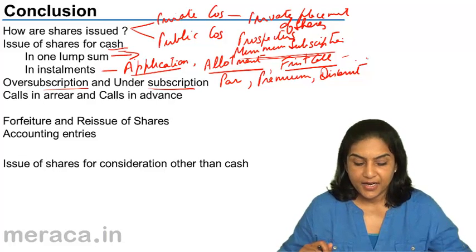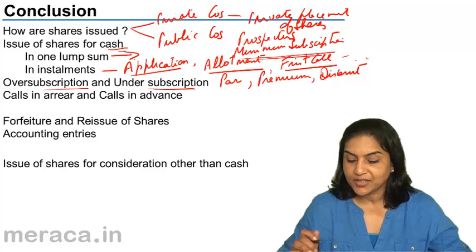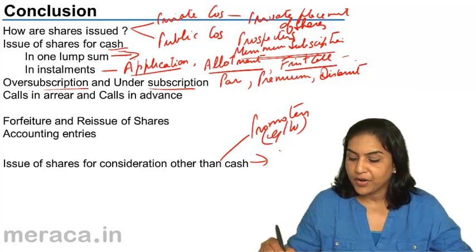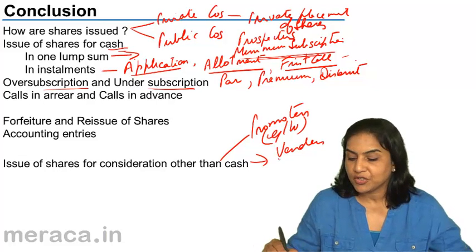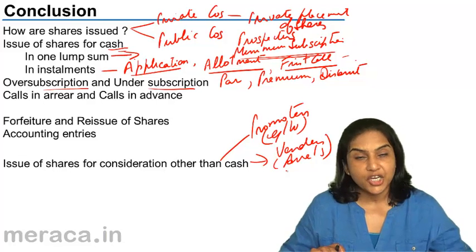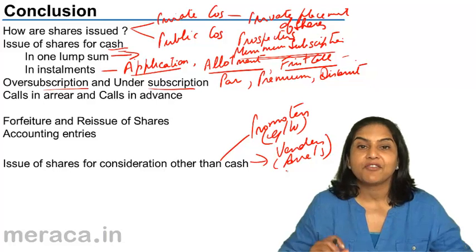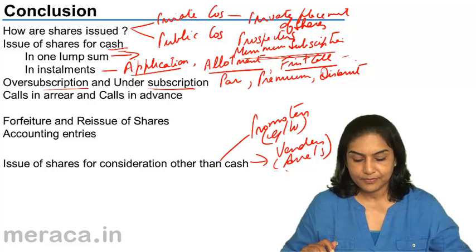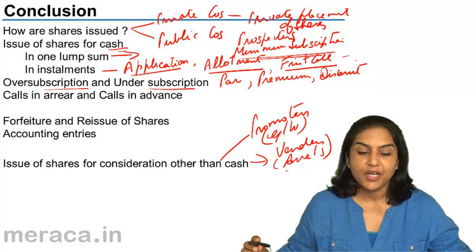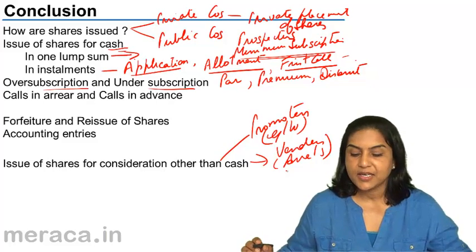Finally, we discussed the issue of shares for consideration other than cash — usually to promoters, in which case it is debited to a goodwill account, or to vendors for purchase of assets. When shares are issued for consideration other than cash, this fact must be disclosed separately in the notes to the balance sheet. With this, we come to the end of our session on issue of shares, forfeiture, and reissue.